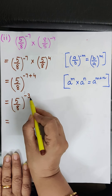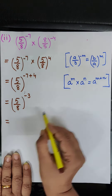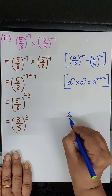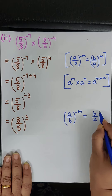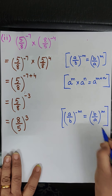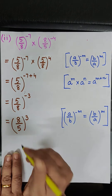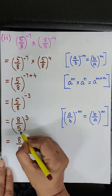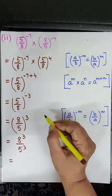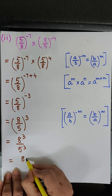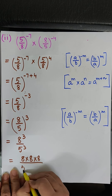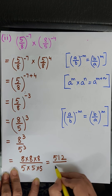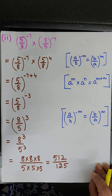Further, using the law a upon b raised to the power minus m equals b upon a raised to the power m, 5 upon 8 raised to the power minus 3 becomes 8 upon 5 raised to the power 3. Always write the law you use, otherwise marks will be deducted. This means 8 to the power 3 upon 5 to the power 3, so 8 into 8 into 8 upon 5 into 5 into 5, which is 512 upon 125. So this completes the question.